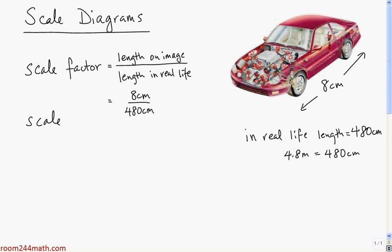There are many different ways to write scale factors and scales, which are essentially the same thing, but you'll see different ways in different contexts. One way is to divide 8 by 480 and write it as a decimal. You get 0.016 with the 6 repeating. This is convenient for some applications but not for others.